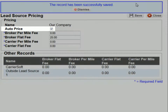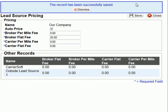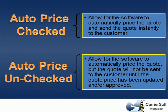Please make note that the auto pricing feature is now controlled from this screen and can be turned on and off separately for each lead provider. Checking the auto price box will allow the software to automatically price the quote and send it instantly to the customer. Leaving the auto price box unchecked will allow the software to automatically price the quote, but the quote will not be sent to the customer until you have had the opportunity to update and/or approve the price. Once you have approved the price, the quote will be sent automatically to the customer.